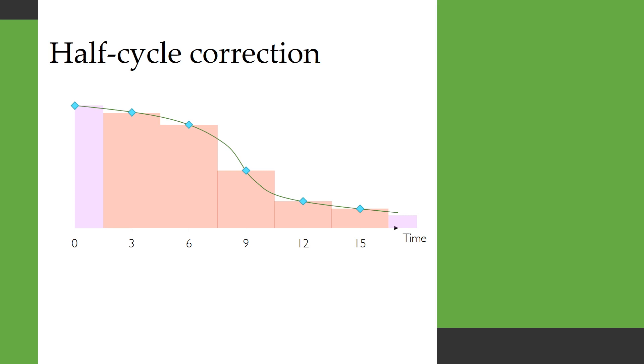So this is called a half cycle correction and it's really simple to do because all you're really doing is dividing the area in the first and also the last cycle by two and everything else stays the same.